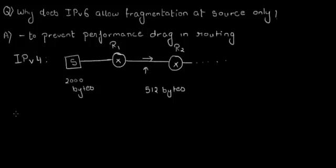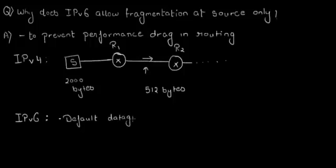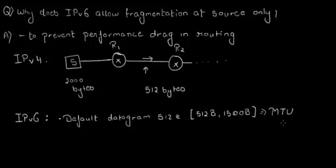IPv6 has placed a constraint that fragmentation can only be done at the source and cannot be done at the routers along the path from source to destination. There are two ways to handle this. One is that the source uses a default datagram size — which can be 512 bytes or 1500 bytes — also called the MTU or Maximum Transmission Unit. This MTU is followed by the source, the destination, and all the links between them.